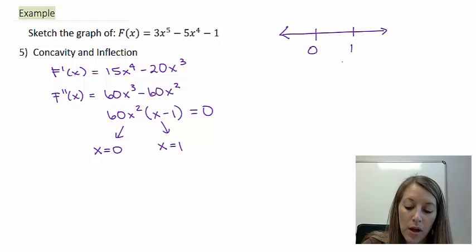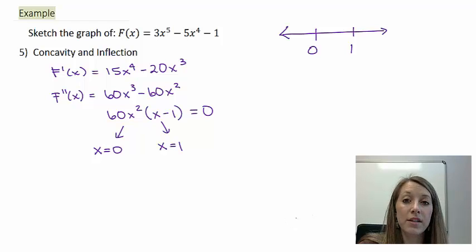So those are the numbers that I'm going to put on my number line. These are my possible inflection points, so we need to confirm whether they are or are not in fact inflection points. If our concavity switches from down to up or vice versa then they are; if it doesn't switch, meaning it goes from up to up or down to down, then they are not inflection points.